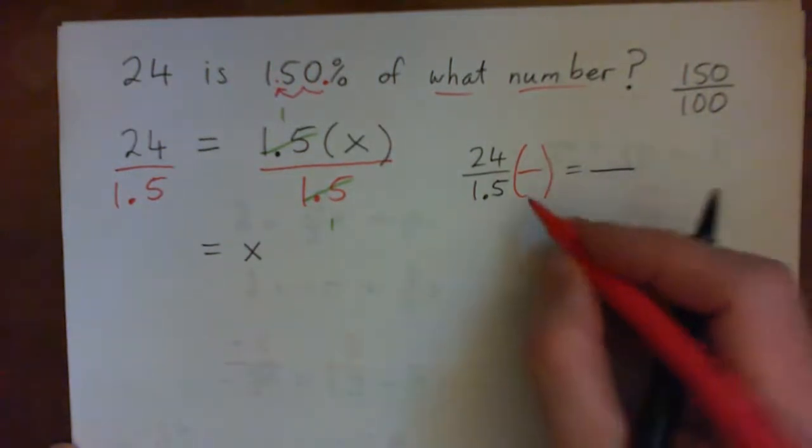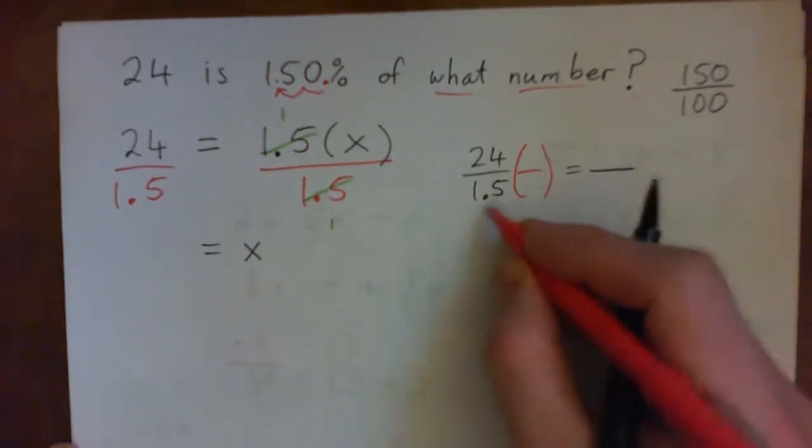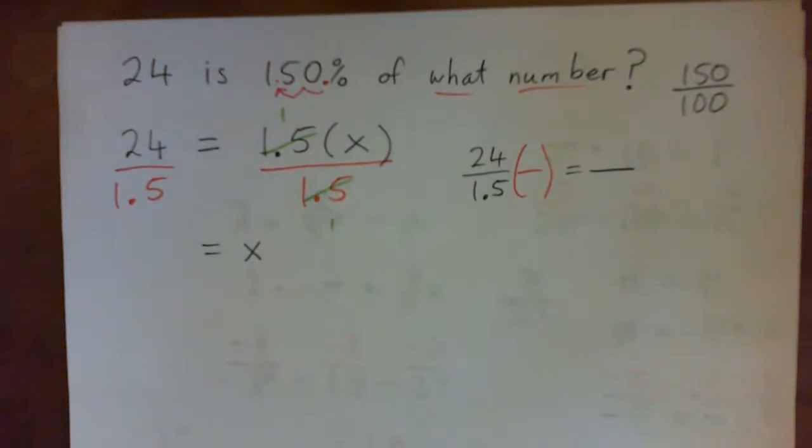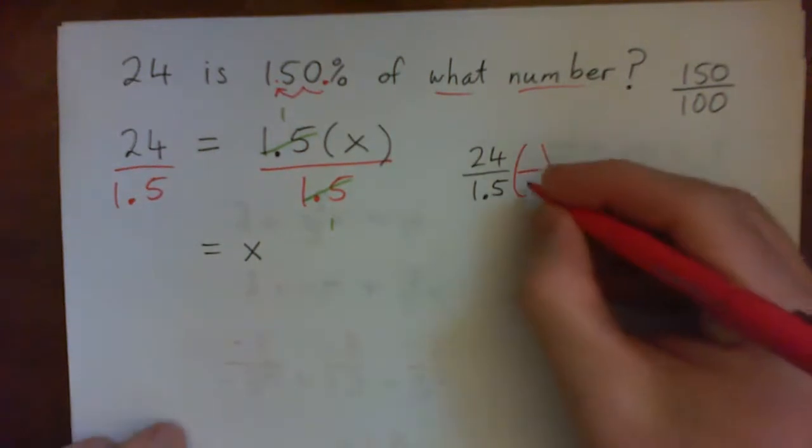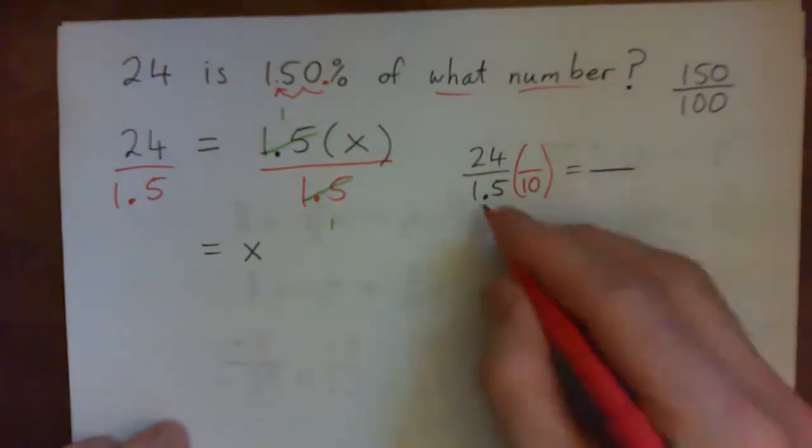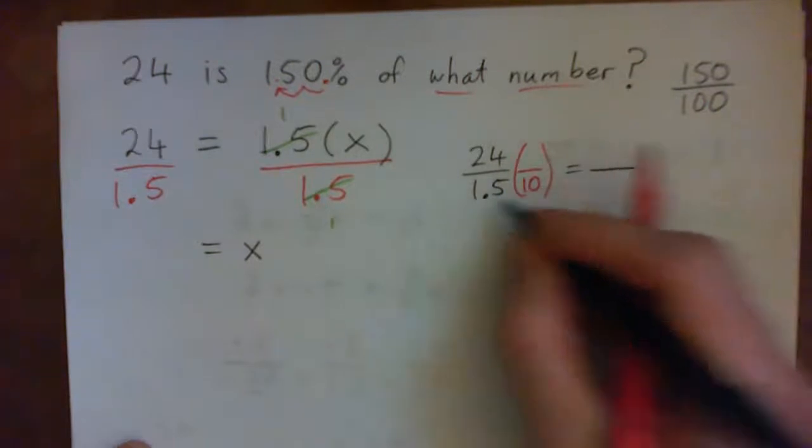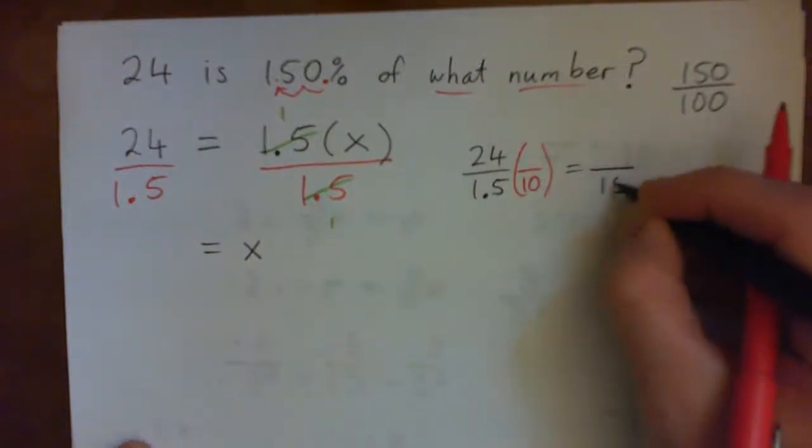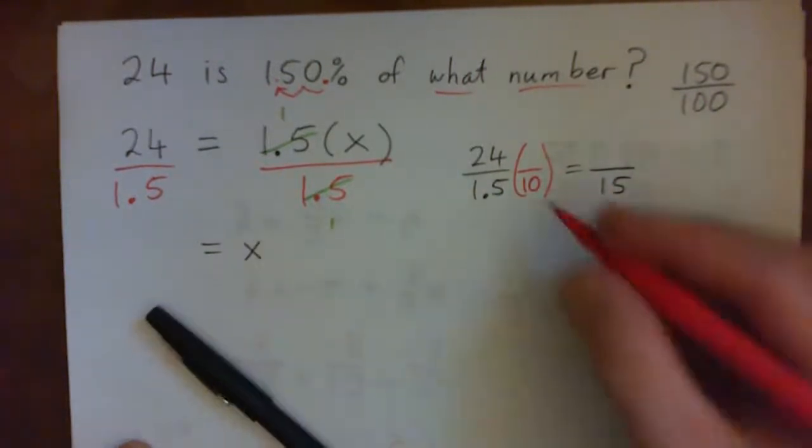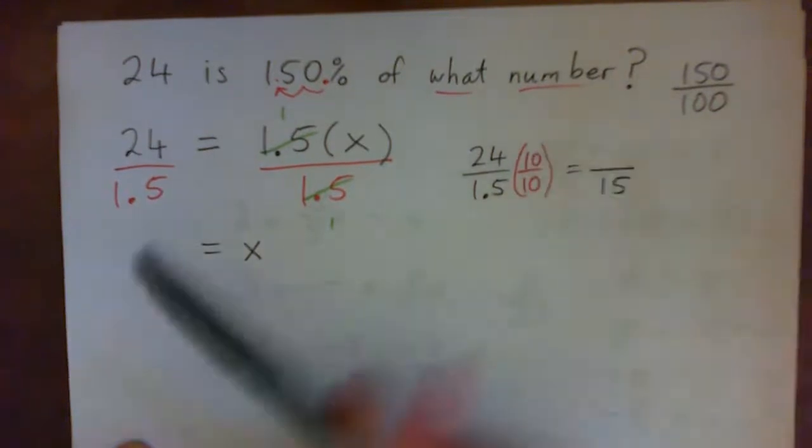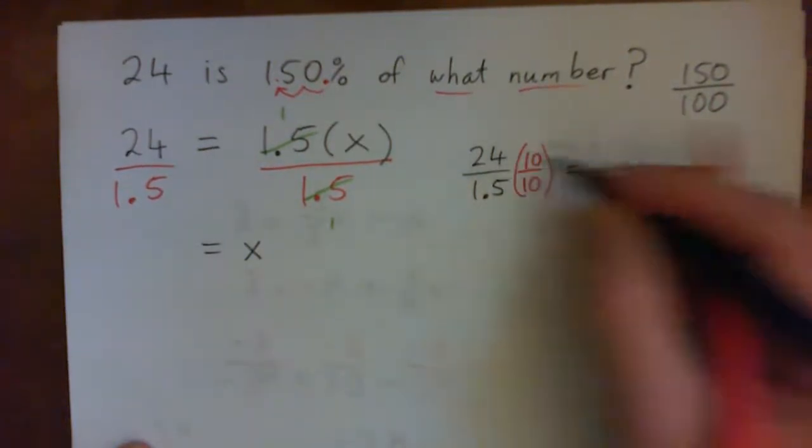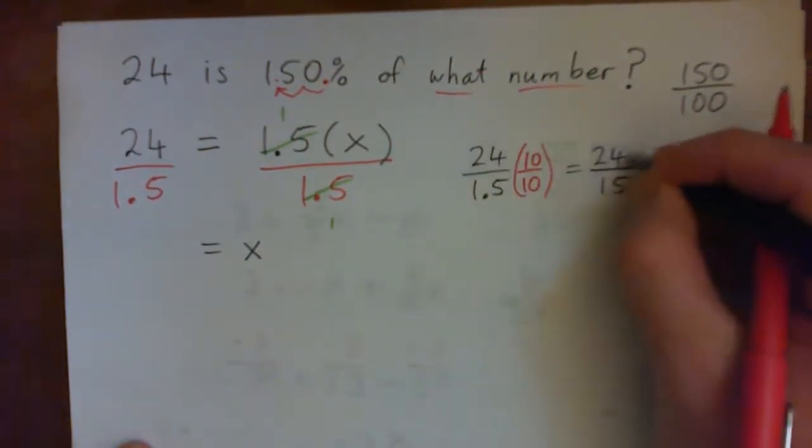So 1.5 times what would get rid of the decimal? So 1.5 times 10 would do it. That's the way we usually do it. 10 times 1.5 gives 15, doesn't it? And we must also multiply the top by 10. 24 times 10, 240.